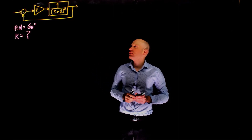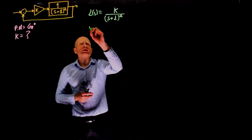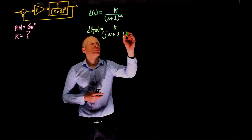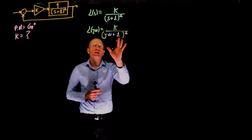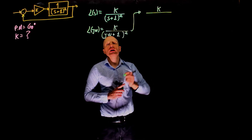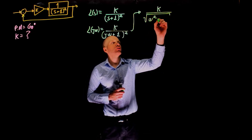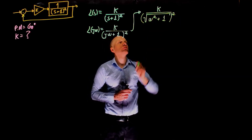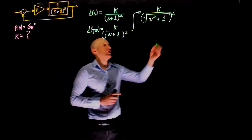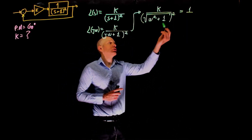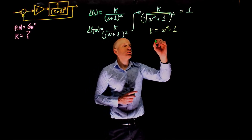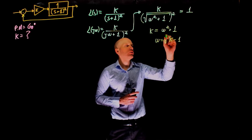The loop transfer function is k divided by (s+1) squared, which can be written as a function of jω as k over (jω+1) squared. To find the crossover frequency, we set the magnitude of this transfer function to 1. The magnitude is k divided by (√(ω²+1))², which equals 1. This simplifies to k equals ω²+1, so omega equals √(k−1).